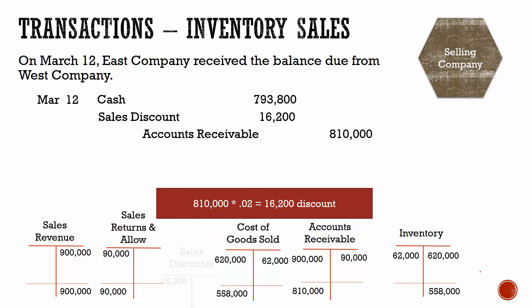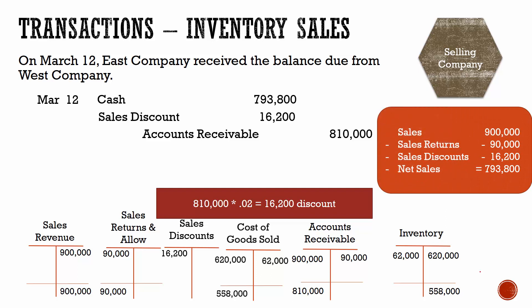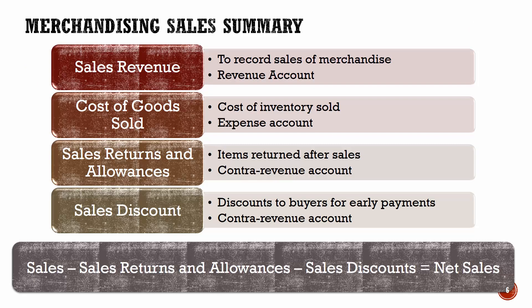We add in a sales discounts account and show our payment decreasing accounts receivable. On this overall transaction with West Company, our net sales ends up at $793,800. In summary: sales revenue is a revenue account used to record sales of merchandise; cost of goods sold is an expense account showing the cost of inventory sold; and we have two contra-revenue accounts — sales returns and allowances and sales discounts — both netted against our sales to calculate net sales for our financial statements.